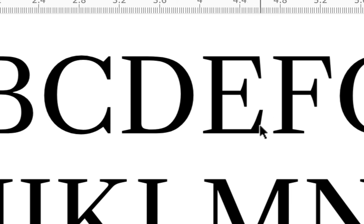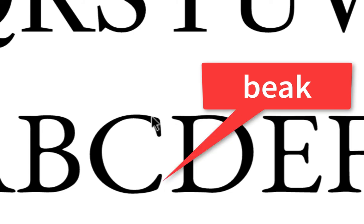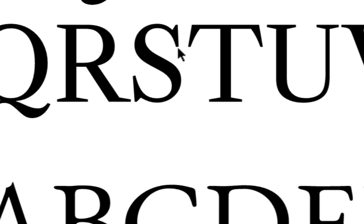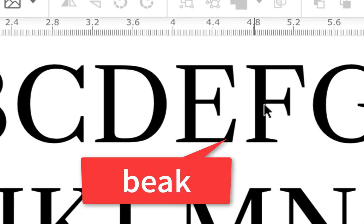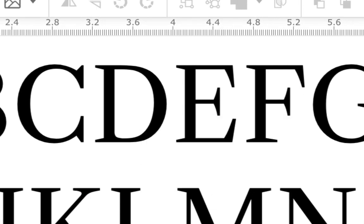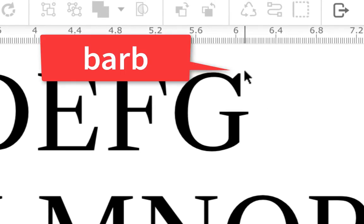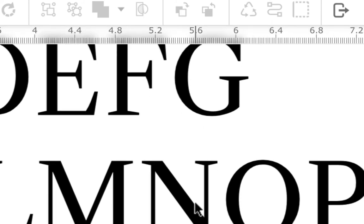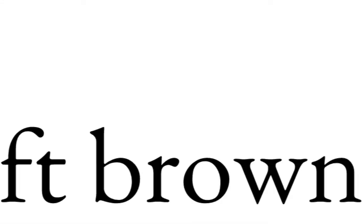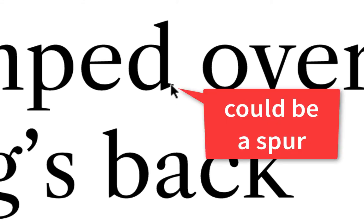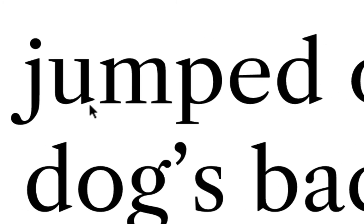They're called beaks when they're at the bottom of the arm, and barbs when they kind of stick up from the opposite side. The 'c' has beaks on it, and this 's' has a barb. Beaks are on the arms; barbs kind of stick up — like on the 'f' or the 't.' The 't' actually has barbs on top of its arm and little beaks coming down, which makes it unique. The 'g' doesn't always have a spur — a spur is that little goatee-like thing, primarily seen on 'g's.